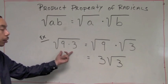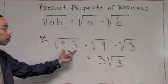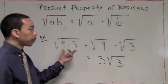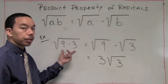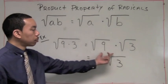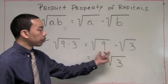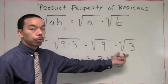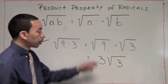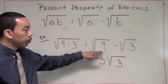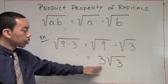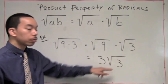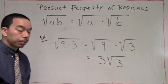The important part here was understanding the product property. The radicand was 9 times 3, so instead of keeping them both underneath the radical, we split them up into the square root of 9 times the square root of 3. We simplified that first radical into 3, and the second radical remained the same.